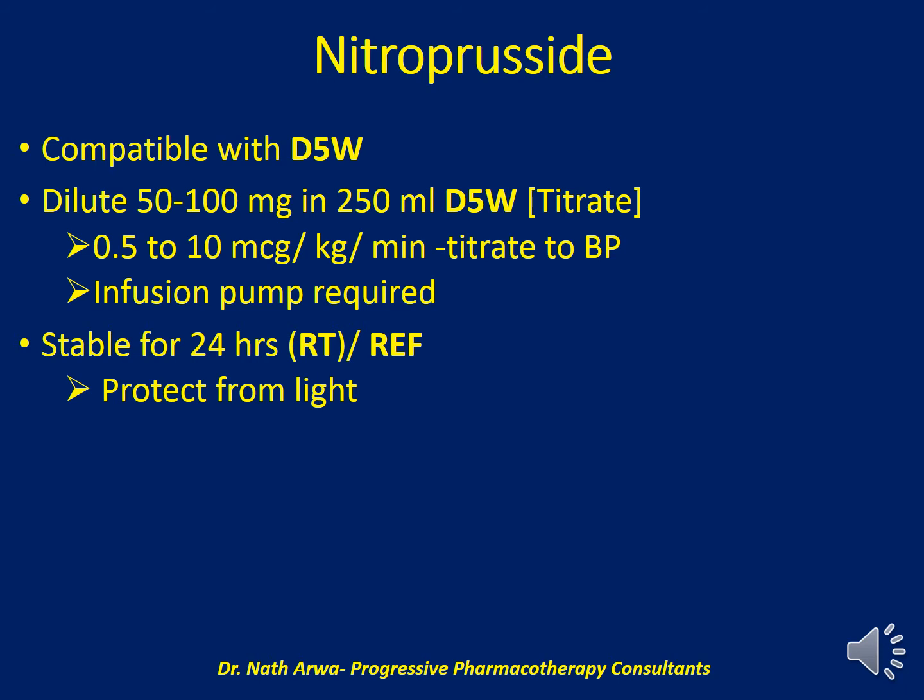Nitroprusside is only compatible with 5% dextrose — do not use normal saline. 50 to 100 mg should be diluted in 250 ml of 5% dextrose, after which the dose should be titrated according to the cardiac team. 0.5 to 10 micrograms per kg per minute can be used as a tentative administration rate, titrated depending on the patient's blood pressure readings. An infusion pump is required when administering IV nitroprusside. Such solutions after homogenizing are stable for 24 hours both at room temperature and under refrigeration, and must be protected from light to maintain stability.